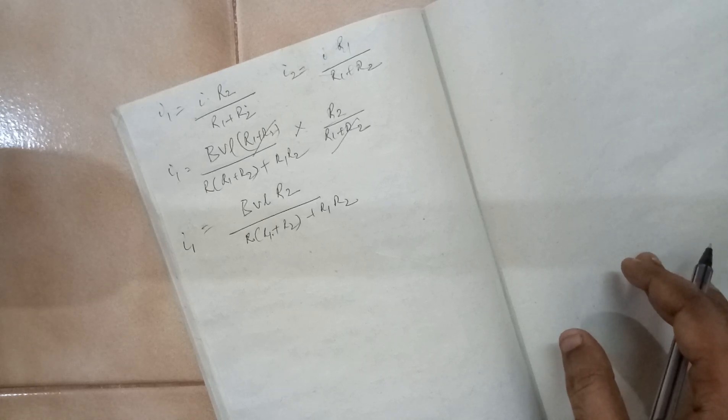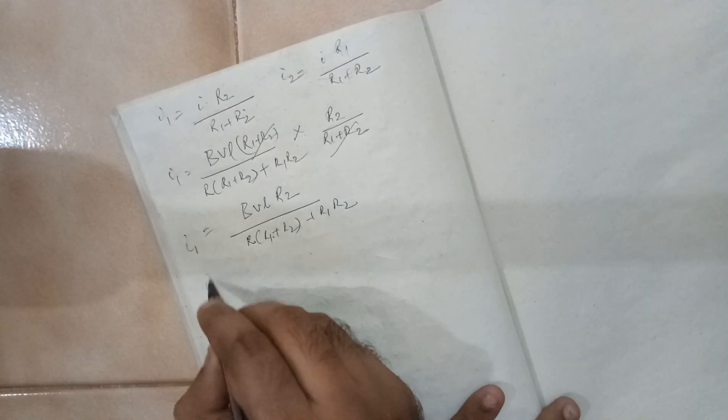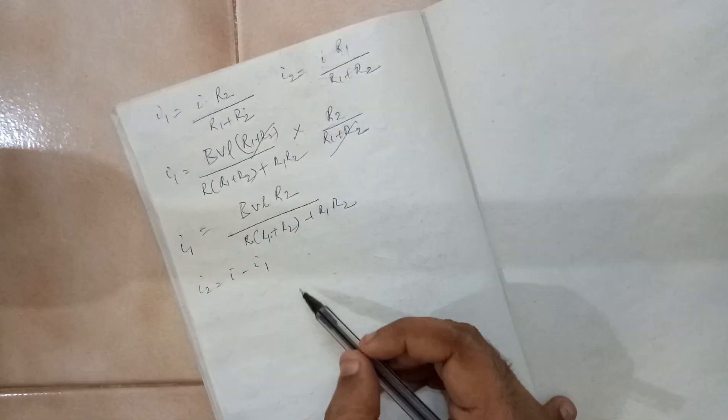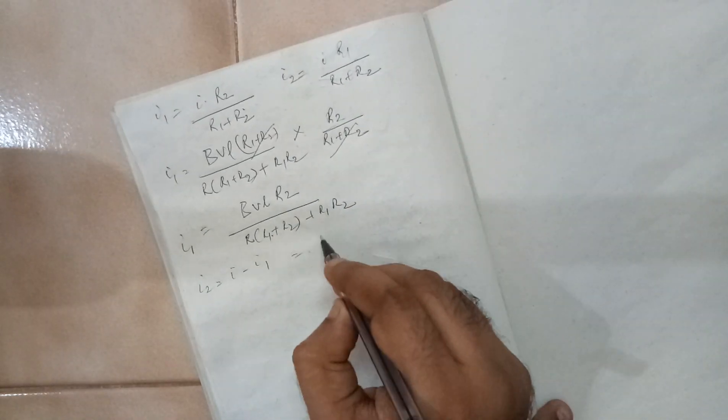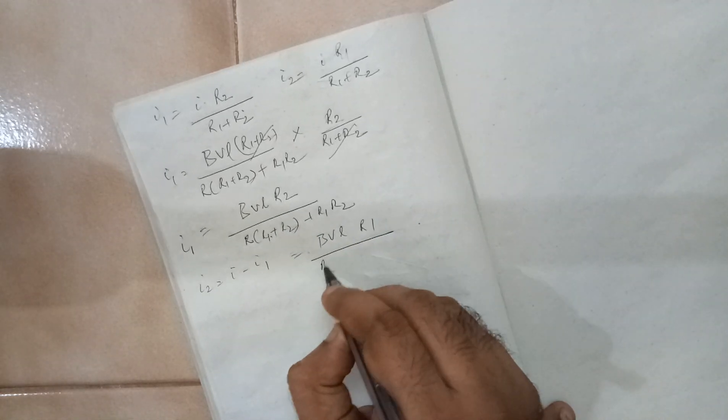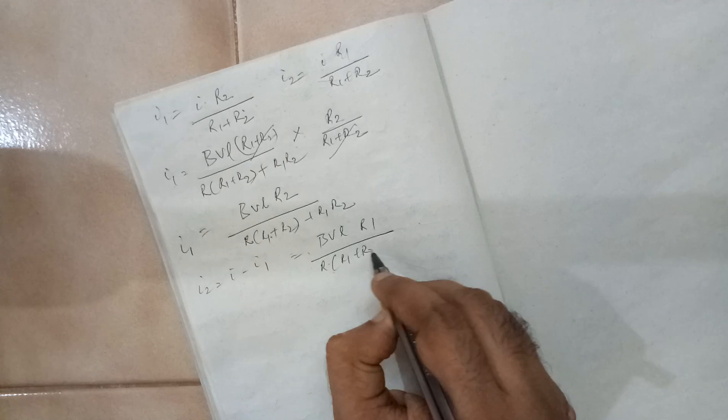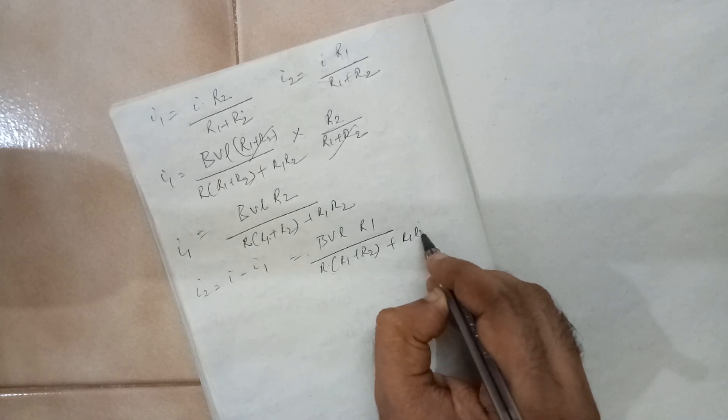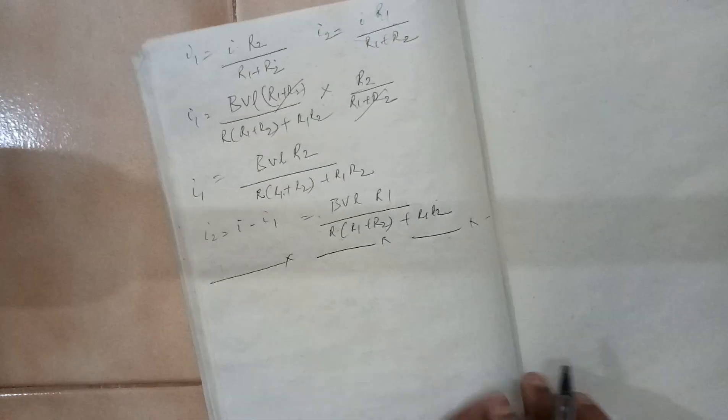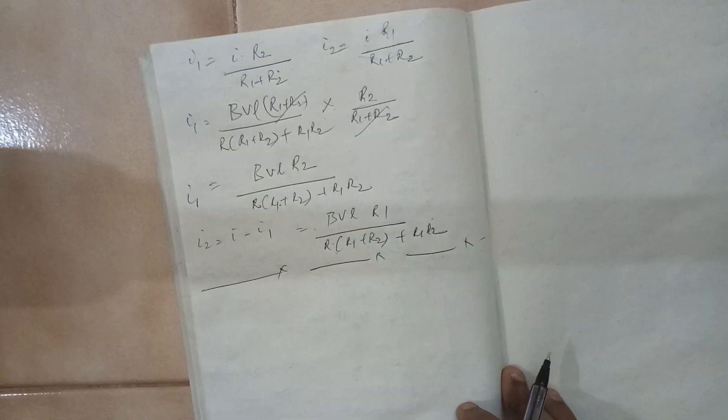How to get the I2 value? I2 value you can find either I minus I1, or you can put this formula for which you will finally get BVL, in place of R2 you will get R1, R into R1 plus R2 plus R1 R2. This is one approach what we have seen.